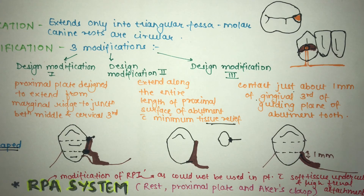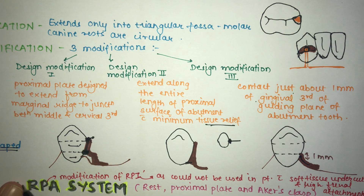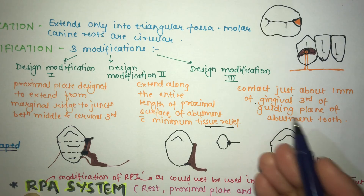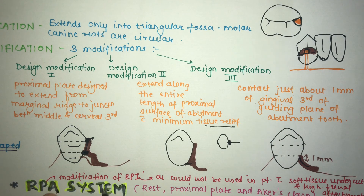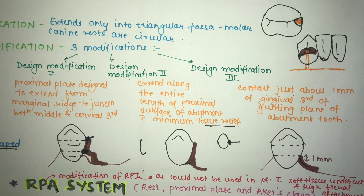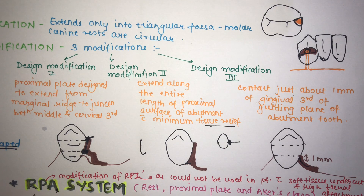The RPA system is a modification of the RPI system. RPA stands for Rest, Proximal plate, and Akers clasp, which is an occlusally approaching direct retainer. In RPA an occlusally approaching retainer is used, whereas in RPI a gingivally approaching retainer is used. This is because the RPI system cannot be used in patients who have soft tissue undercuts or high frenum attachment. In such cases, the direct retainer must approach occlusally, making the RPA system appropriate.